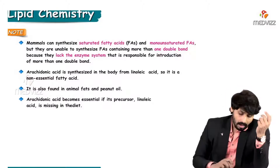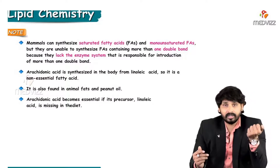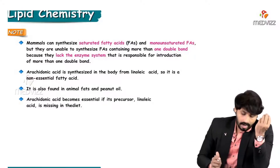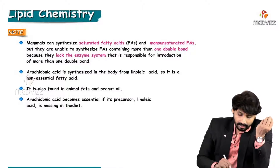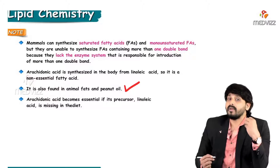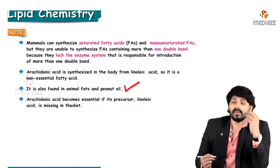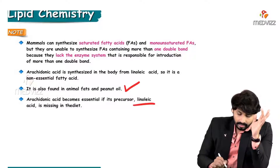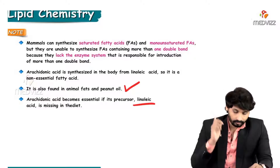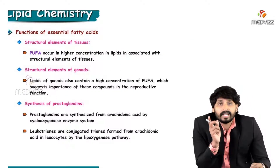Arachidonic acid is synthesized in the body from linoleic acid. It is a non-essential fatty acid and is also found in animal fats and peanut oil. Arachidonic acid becomes essential only if its precursor, linoleic acid, is missing in the diet — if your diet does not have linoleic acid, then only arachidonic acid becomes essential.